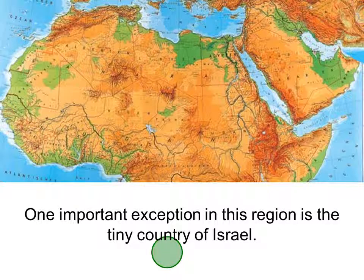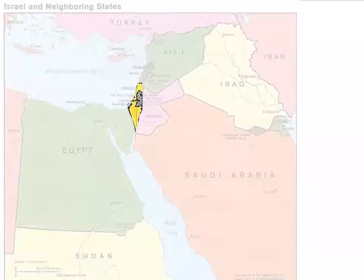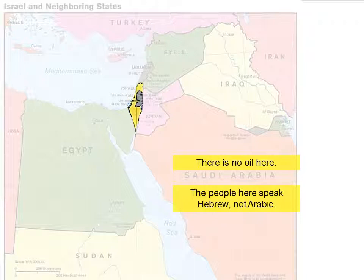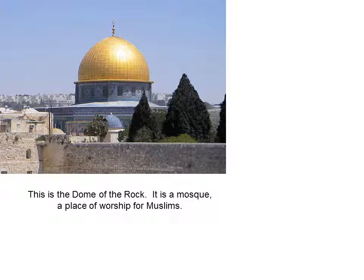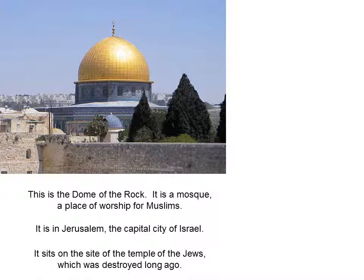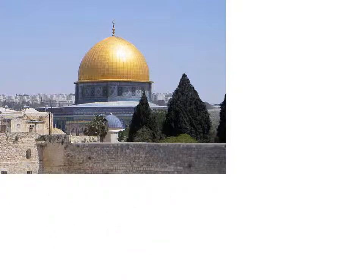One important exception in this region is the tiny country of Israel. Israel is not a Muslim state — it is a Jewish state. However, not everyone who lives here is Jewish. Here is the Dome of the Rock, a mosque and place of worship for Muslims located in Jerusalem, the capital city of Israel. It sits on the site of the Temple of the Jews, which was destroyed long ago. Many Jews long for the day when they can rebuild this temple, and the fact that there is a Muslim mosque on that site makes some Jewish Israelis angry.